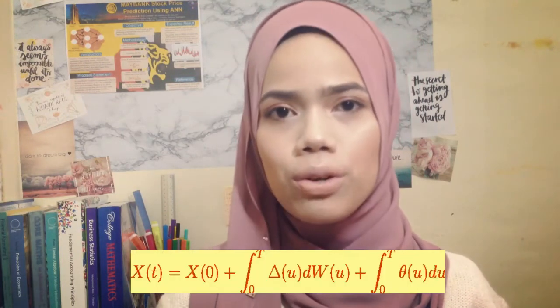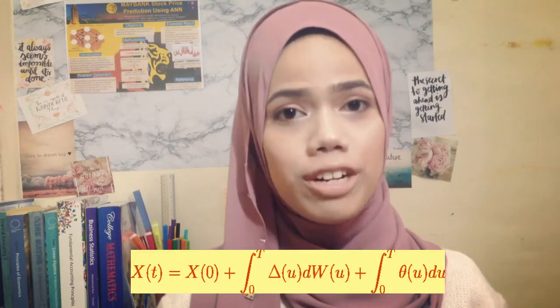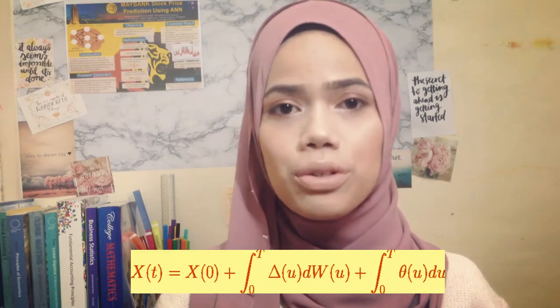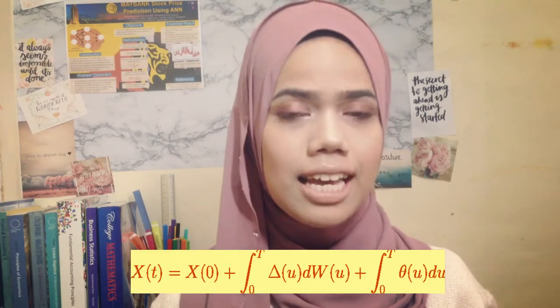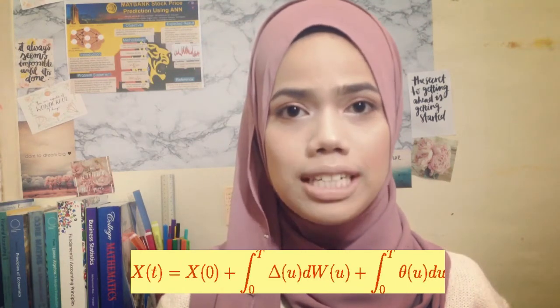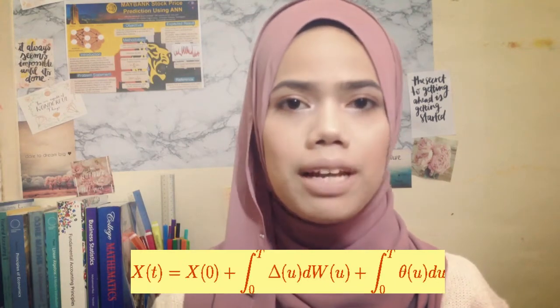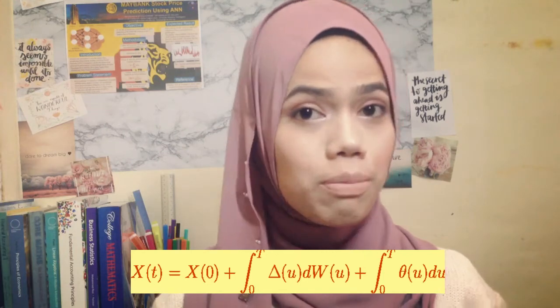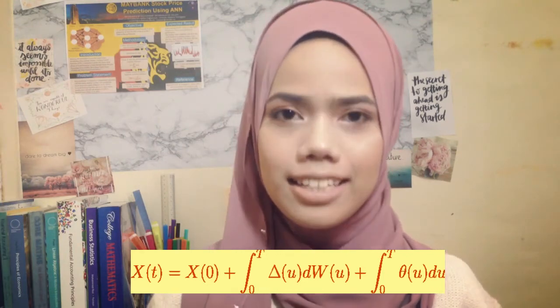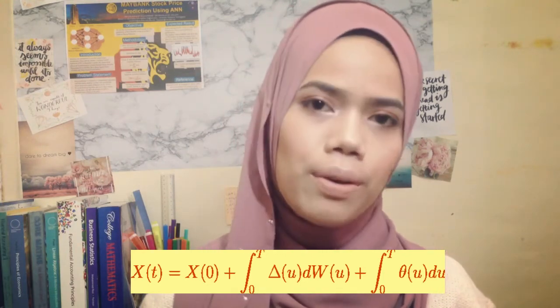Brownian Motion takes the form: X_t equals X_0 plus the integration from 0 to T of delta_u dW_u, plus the integration from 0 to T of theta_u du, in which W is the Wiener process, or the Brownian Motion.